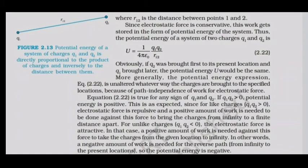This equation U = k·q1·q2/r12 holds for any sign of q1 and q2. If q1·q2 > 0 (like charges), potential energy is positive, as work must be done against the repulsive force. For unlike charges where q1·q2 < 0, the electrostatic force is attractive, and a negative amount of work is needed to bring them from infinity — so the potential energy is negative.